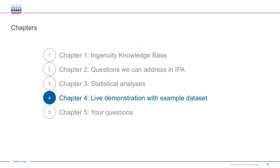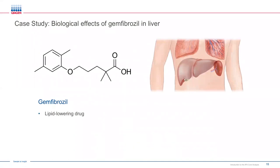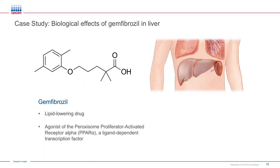Now I'm going to introduce you to the case study I'll use in today's live demonstration. The data set comes from a study examining the effects of gemfibrozil — a drug used to decrease the amount of fat produced in the liver and lower the level of lipids in the bloodstream. It's commonly prescribed for patients with pancreatitis who have high cholesterol and triglyceride levels. This drug is an agonist that activates the peroxisome proliferator-activated receptor alpha (PPAR-alpha), a ligand-dependent transcription factor.